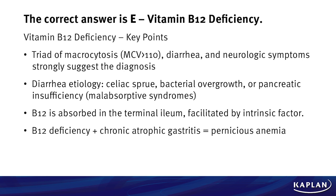Do you know about B12 physiology? It's absorbed in the terminal ileum and you need intrinsic factor to do so. A side point: if we have B12 deficiency and chronic atrophic gastritis, you can think about pernicious anemia. A lot of different things could cause B12 deficiency — all you had to do here was diagnose it, but as a critical thinker, consider what could have caused it.